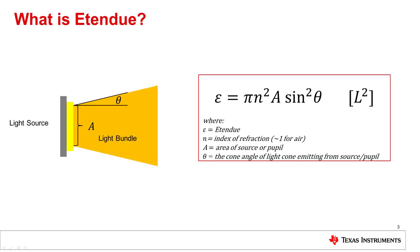Etendu is a geometric property of light that quantifies how much space the light takes up spatially and angularly. Ultimately, it quantifies the throughput capability of the optical system for systems where the light needs to be coupled. Mathematically, it is the product of the area of a source or pupil and the solid angle that the light emitted from that area subtends. If we assume a circularly symmetric source shown in cross section above, etendu can be simplified to the equation shown.